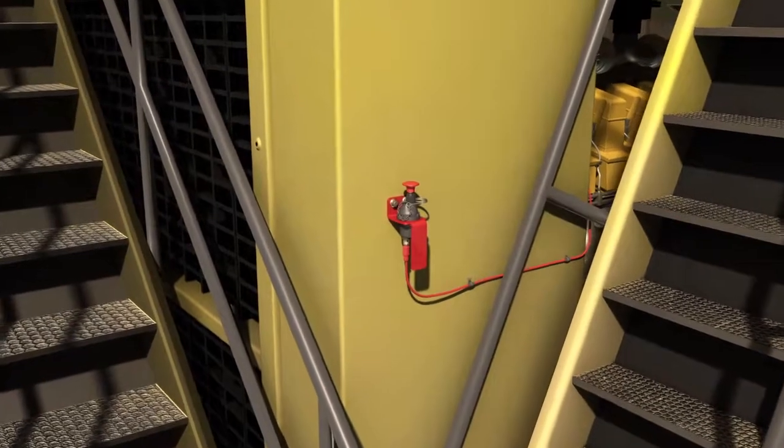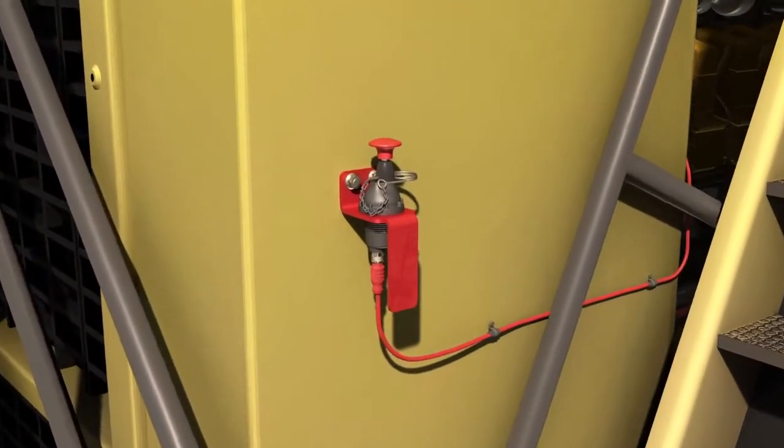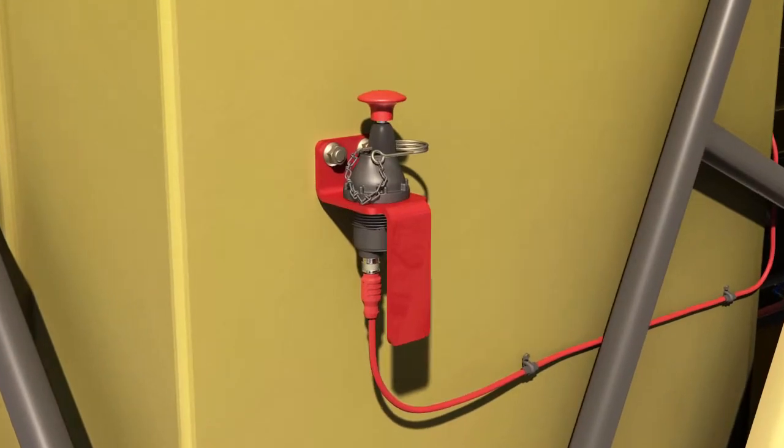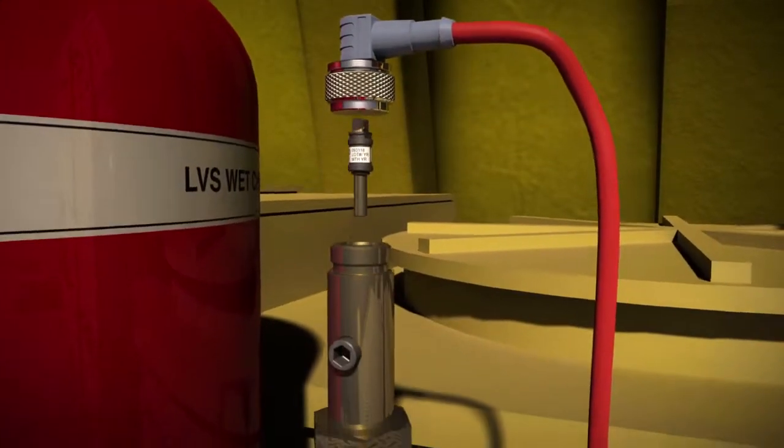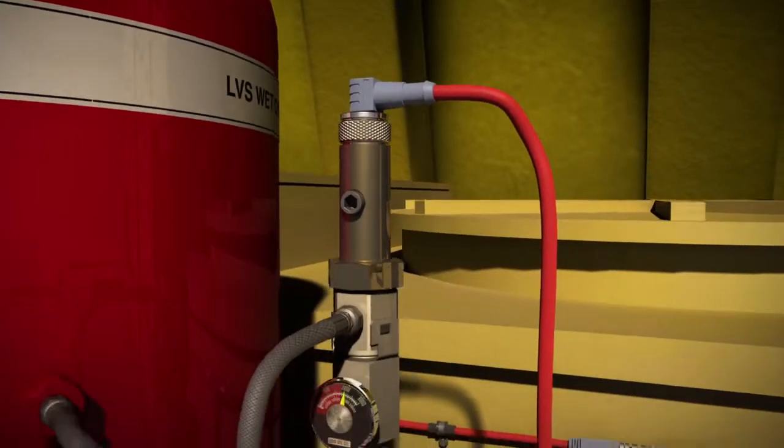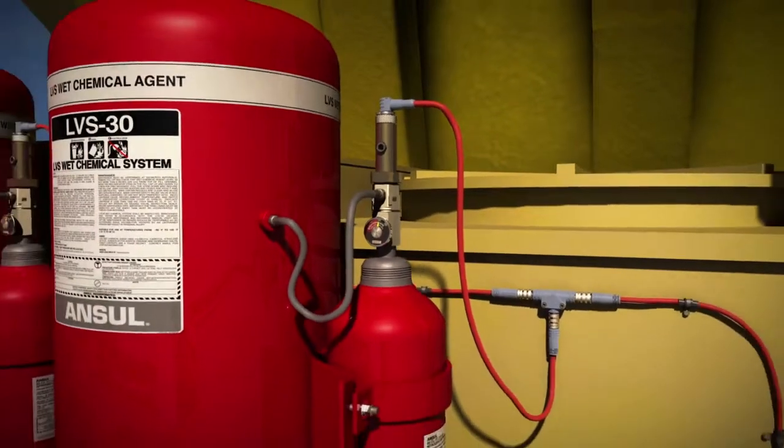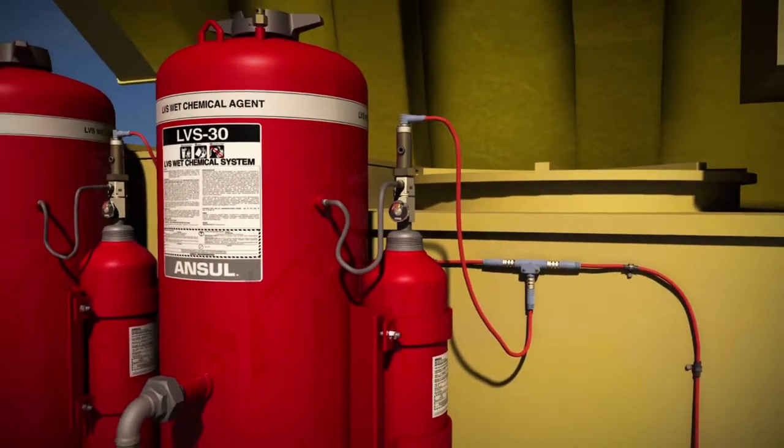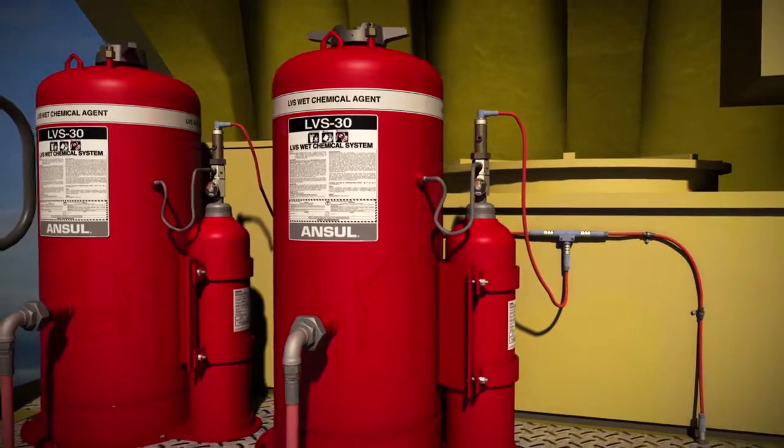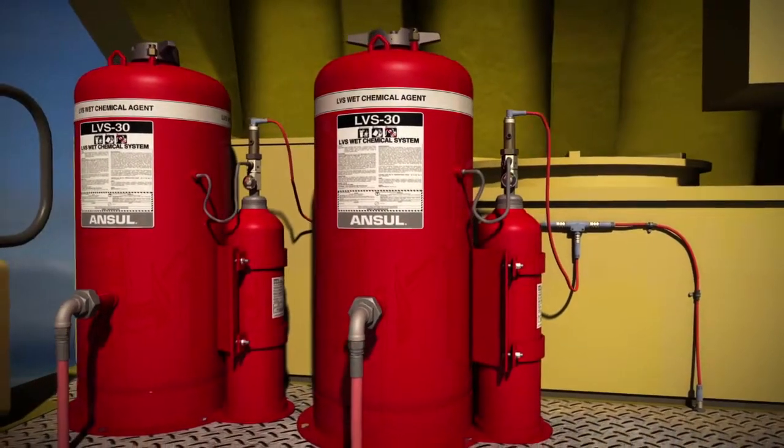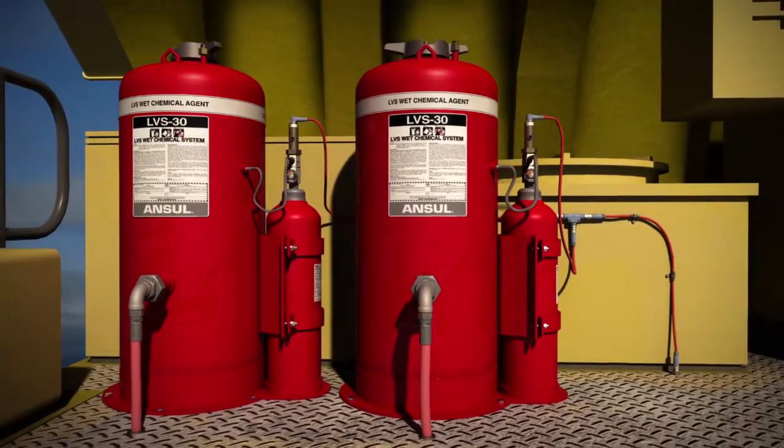The electric manual actuator provides an additional means of remote manual actuation and is located along paths of egress. The protracting actuation device is installed in the electric pneumatic actuator which is mounted on the expellent gas cartridge located near the agent tank. The release circuit provides supervision from the CheckFire 210 system to the electric pneumatic actuator and can actuate a maximum of 10 electric pneumatic actuators.